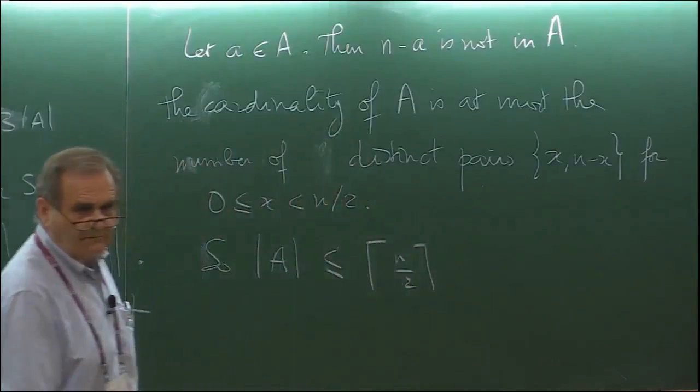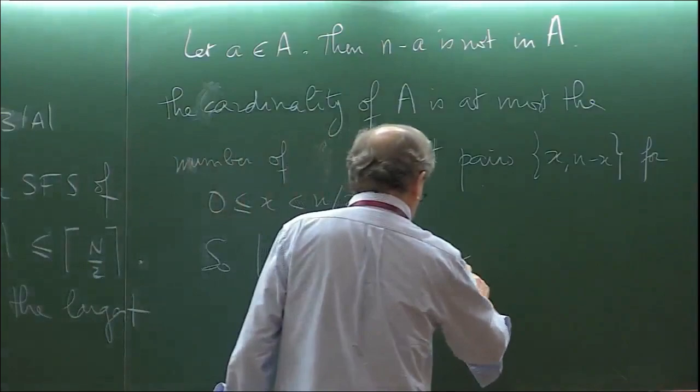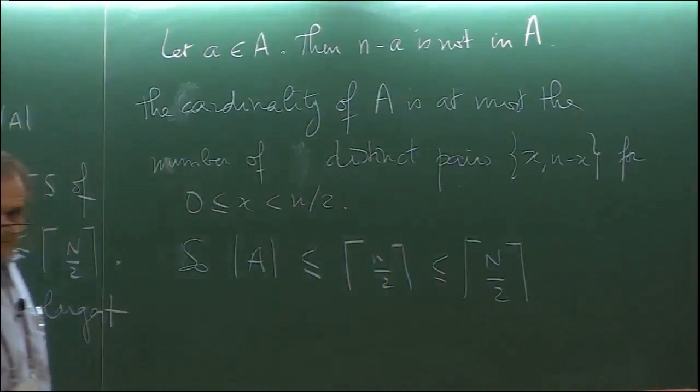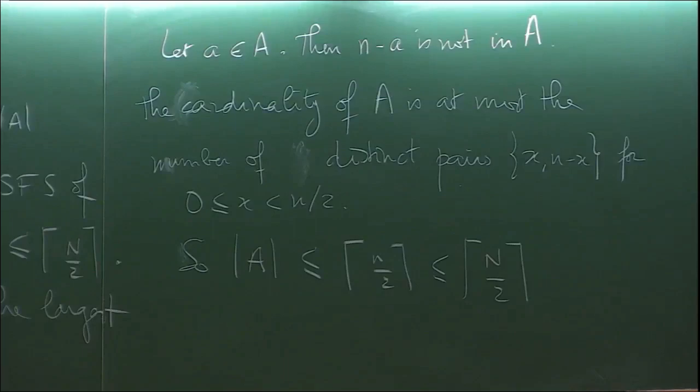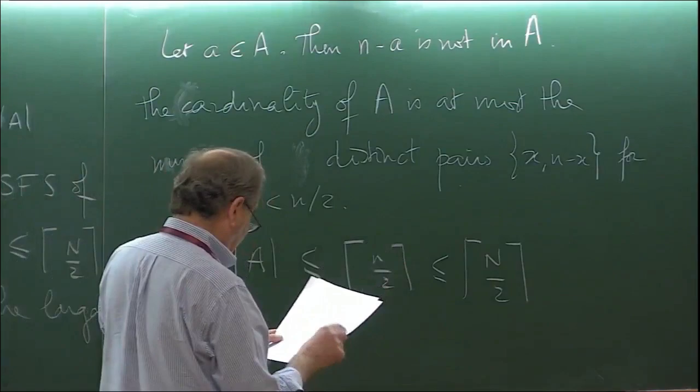The ceiling function is non-decreasing. The little idea that 'sum-free implies difference-free' gives a very short proof — the proof of the book. You can do something more complicated, but this is the clean proof.